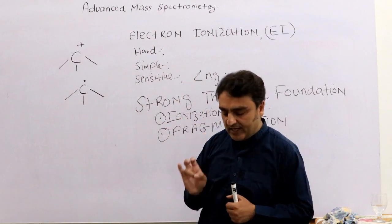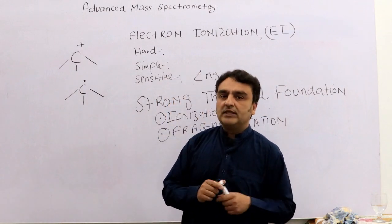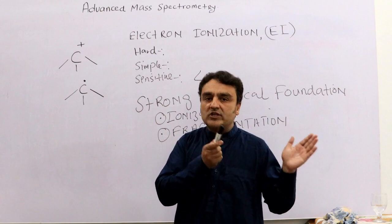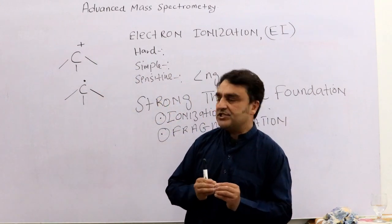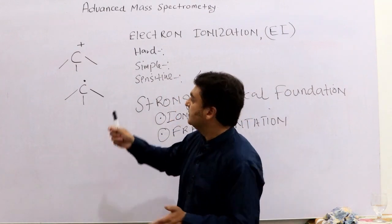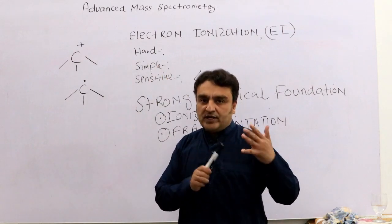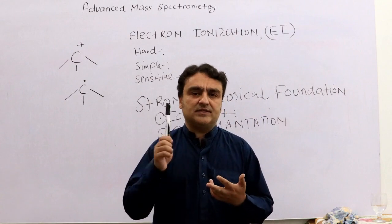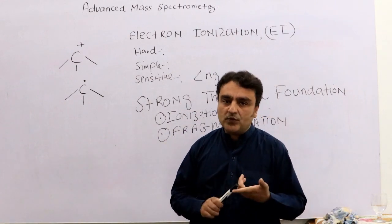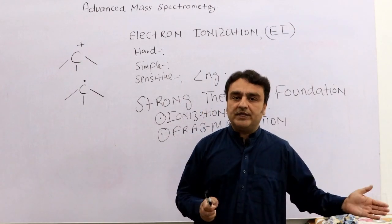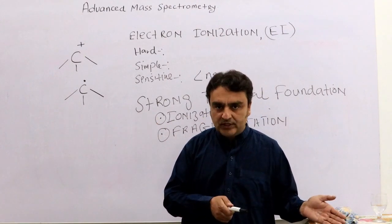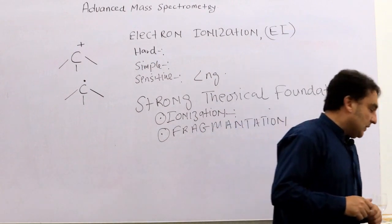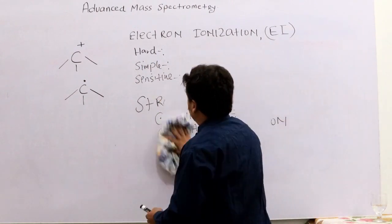I am relating this to mass spectrometry because in mass spectrometry these types of species are produced — a species similar to a free radical or carbocation. In electron ionization, a dual-type species is produced, which we will explain in the ionization section. So electron ionization is sensitive, easy to understand, and backed by strong theory.